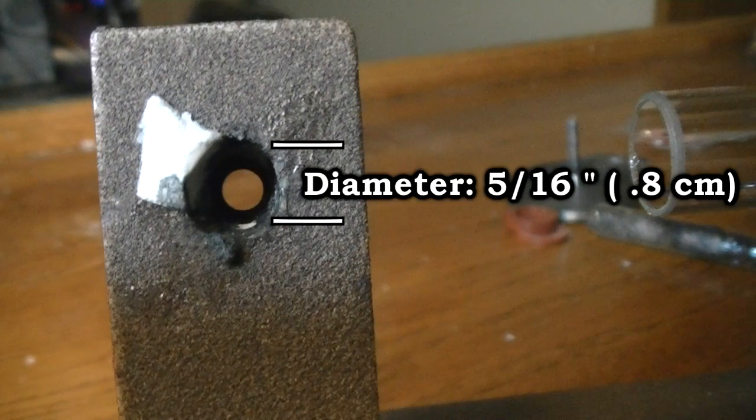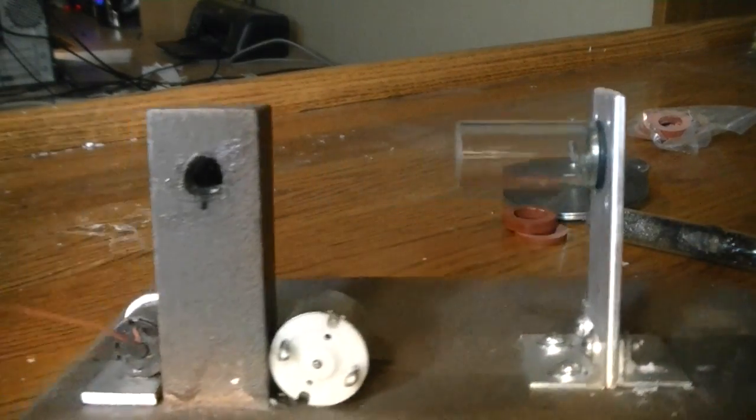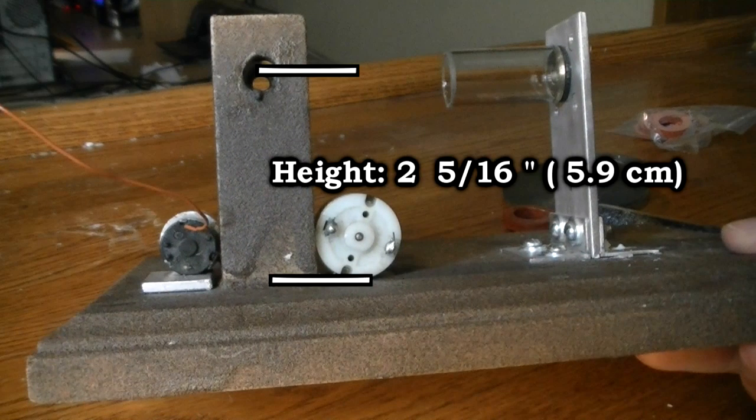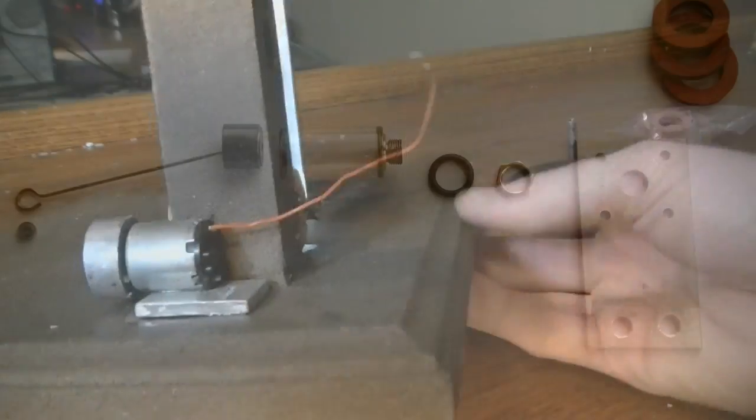The hole drilled through the column is 5 sixteenths of an inch in diameter for the most part. The hole that is drilled through the column is centered at 2 and 5 sixteenths of an inch from the base. This is the same height as the center of the hole in the aluminum support column.